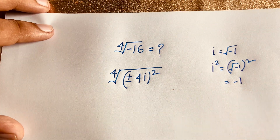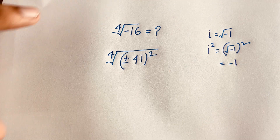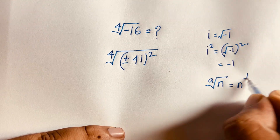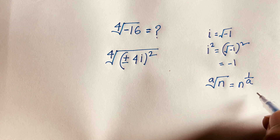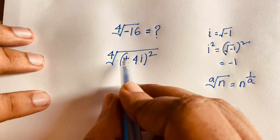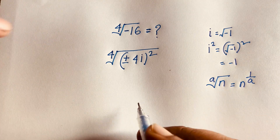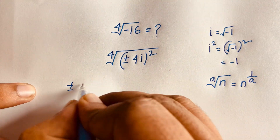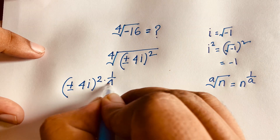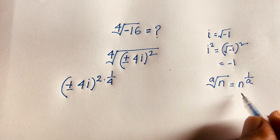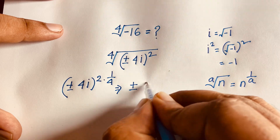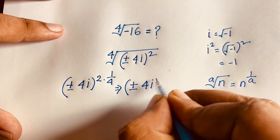Now, using the rule that the n-th root equals the power 1/n, I can write: ⁴√((±4i)²) = (±4i)^(2/4). Dividing 2 by 4 gives (±4i)^(1/2).